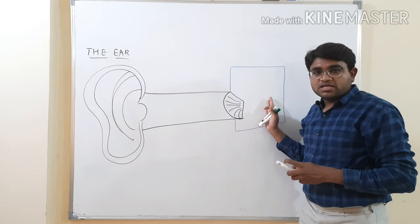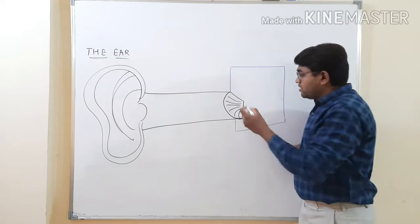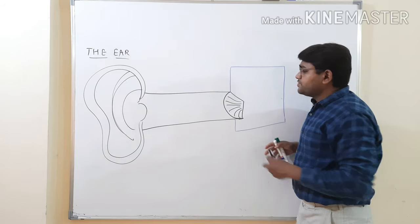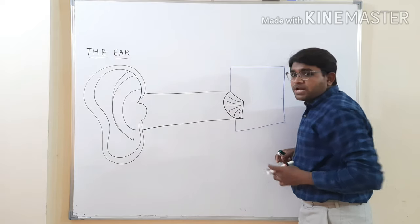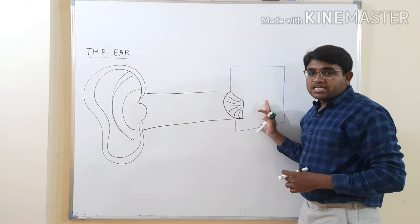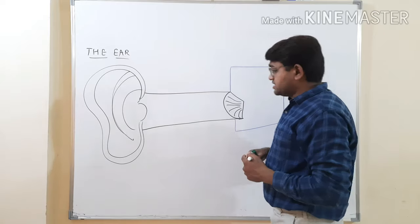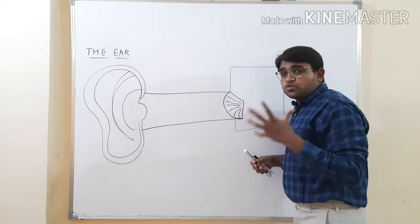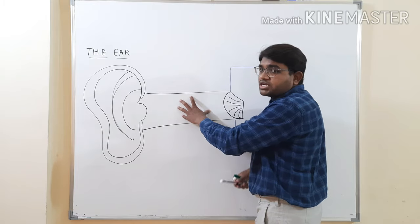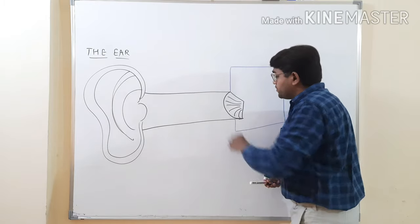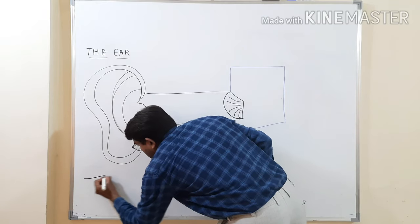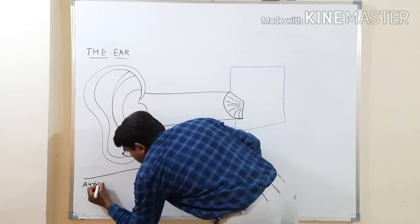The tympanic membrane separates the external ear from the middle ear, so it lies at the transition between the two. In some books it is studied with the external ear and in others with the middle ear. The external ear is formed by two main structures: the pinna or auricle, and the external acoustic meatus. We will discuss the tympanic membrane together with the external ear.